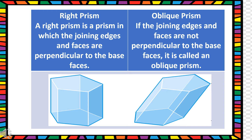Usually we see right prisms only, but a prism can be a right prism or an oblique prism. A right prism is a prism in which the joining edges and faces are perpendicular to the base faces, as you can see in the diagram. Whereas an oblique prism is a prism where the joining edges and faces are not perpendicular to the base.